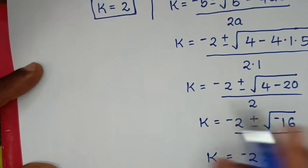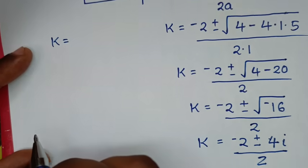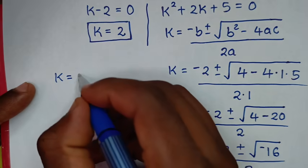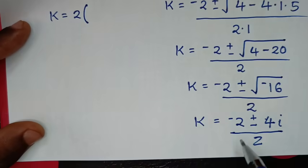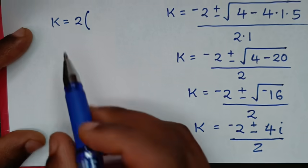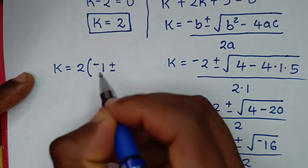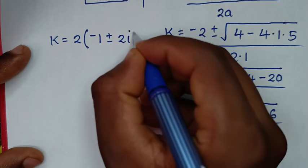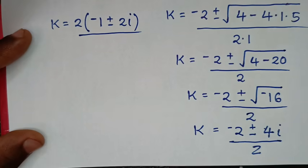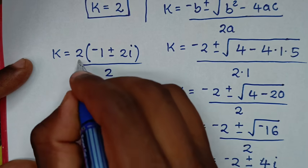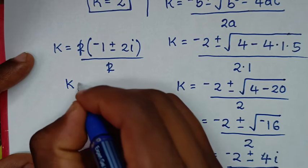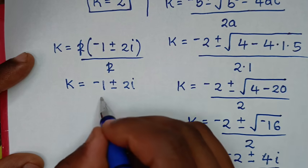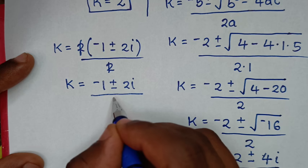In the next step, we factorize and take 2 as common from the numerator. So negative 2 divided by 2 is negative 1, and 4i divided by 2 is 2i. The 2 in the numerator and the 2 in the denominator cancel, giving k equals negative 1 plus or minus 2i. These are two complex solutions.